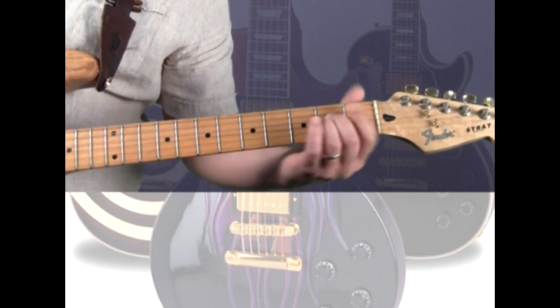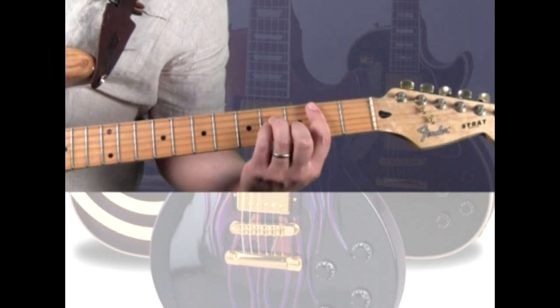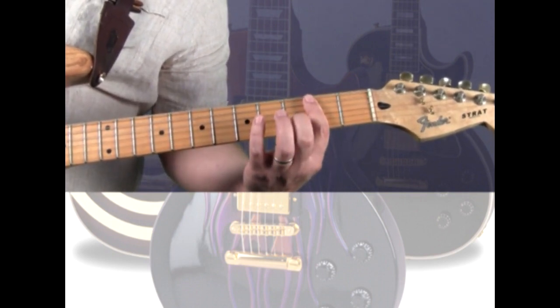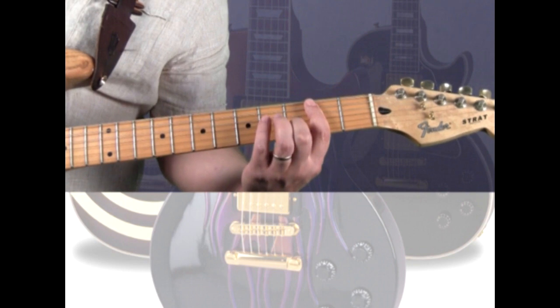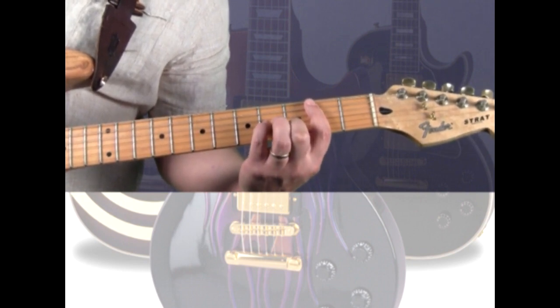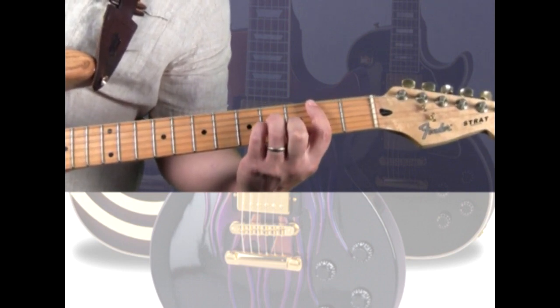To play the B minor, bar your index across the 2nd fret, strings 1 through 5, and add the 2nd string 3rd fret with the middle, 3rd string 4th fret with the pinky, and 4th string 4th fret with the ring.